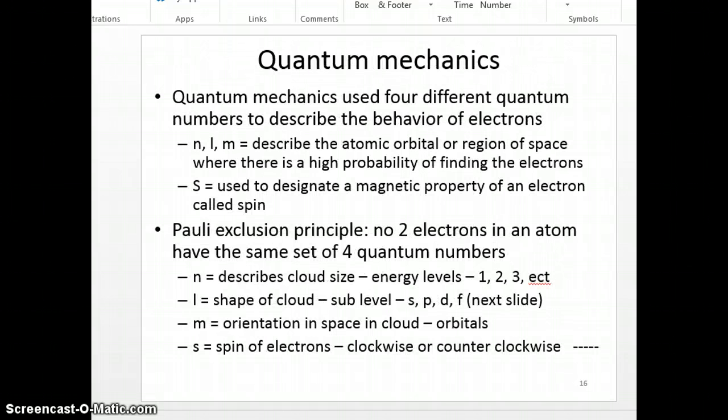And again, now we have some quantum mechanics. Quantum mechanics uses four different quantum numbers to describe electrons. The four are N, L, M, and S. N, L, and M describe the orbital or where that electron is, the highest probability we're going to find that electron. S is going to describe its spin. These electrons are spinning. From quantum mechanics came the Pauli Exclusion Principle. No two electrons in an atom have the same four set of quantum numbers.